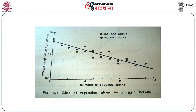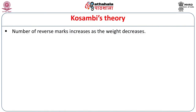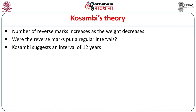For this, Kosambi adopted a statistical method and took a group of freshly minted coins from Taxila, counting the number of reverse marks on them. In the graph, the number of reverse marks is on one axis and the average weight of coins in grains on the other, and the graph goes down — showing concentration at single points with a line of regression on the Y-axis. Kosambi's theory was: the number of reverse marks increases as the weight decreases.